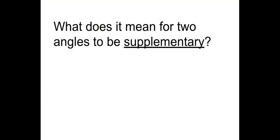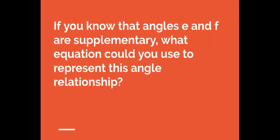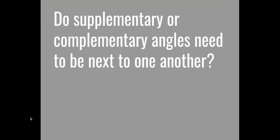What does it mean for two angles to be supplementary? It means their measures sum to 180 degrees. If angles E and F are supplementary, you can write the equation E plus F equals 180, creating that number sentence or equation.